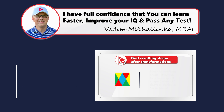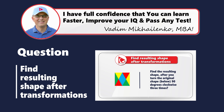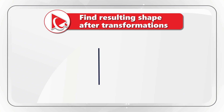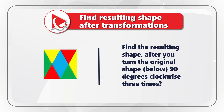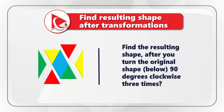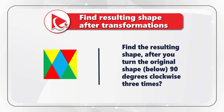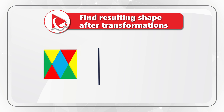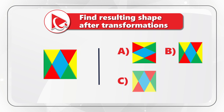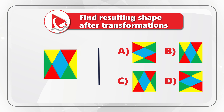I love this challenge because it tests your analytical skills and spatial reasoning skills so well. You need to find the resulting shape after the transformations. You're presented with a square that consists of different triangles of different colors, and you need to turn the original shape 90 degrees clockwise three times. You have four different choices — A, B, C, and D — to select the shape after the transformations. Take a close look to see if you can calculate the final solution.